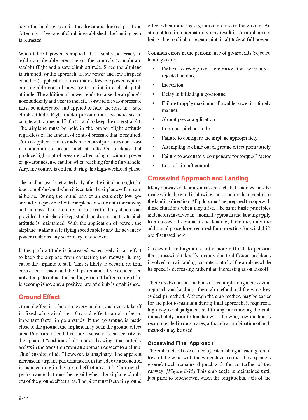During the initial part of an extremely low go-around, it is possible for the airplane to settle onto the runway and bounce. This situation is not particularly dangerous provided the airplane is kept straight and a constant, safe pitch attitude is maintained. With the application of power, the airplane attains a safe flying speed rapidly and the advanced power cushions any secondary touchdown. If the pitch attitude is increased excessively in an effort to keep the airplane from contacting the runway, it may cause a stall—especially if no trim correction is made and flaps remain fully extended. Do not attempt to retract the landing gear until after a rough trim is accomplished and a positive rate of climb is established.